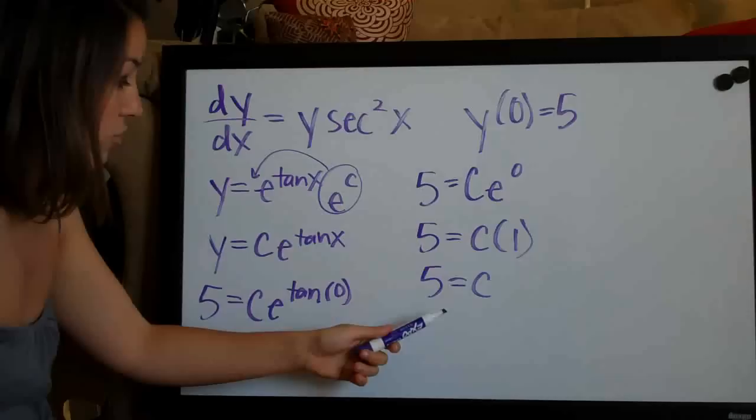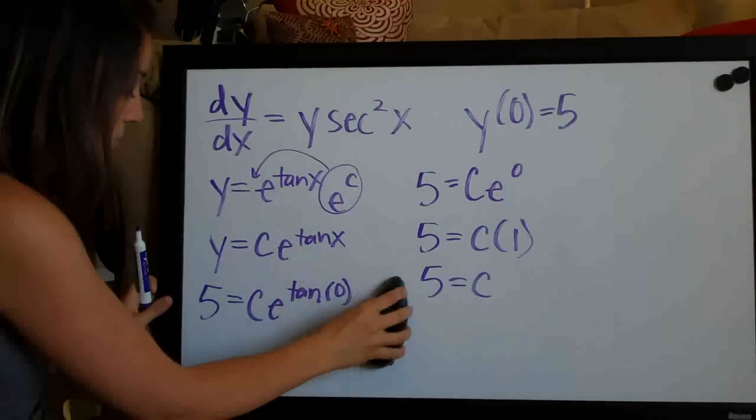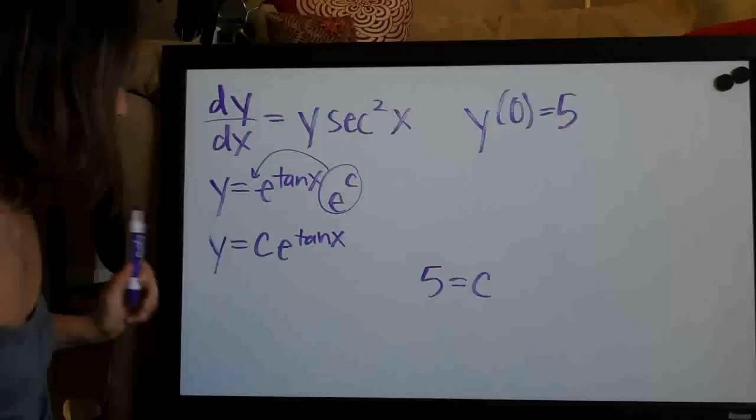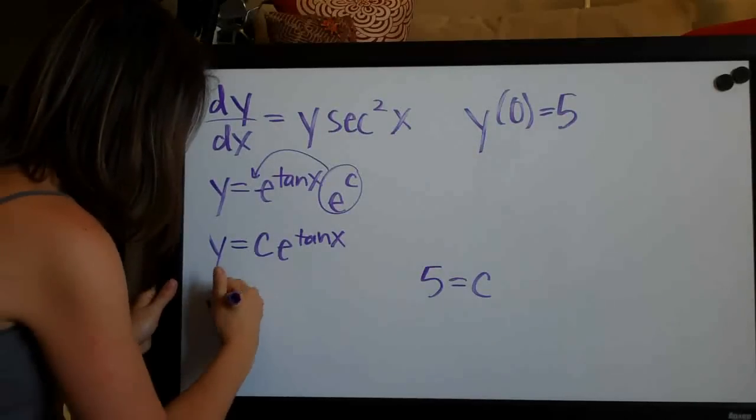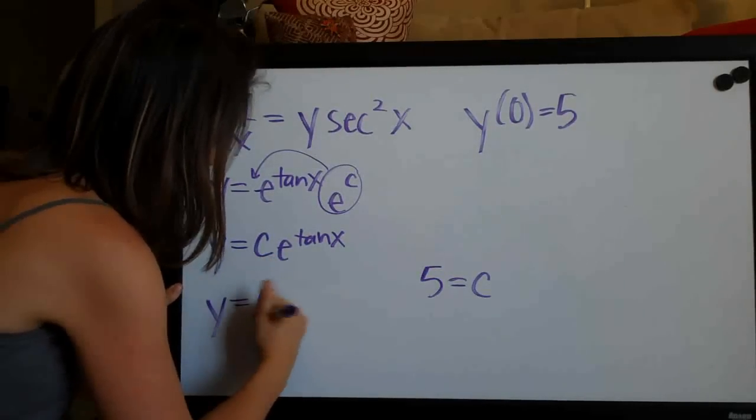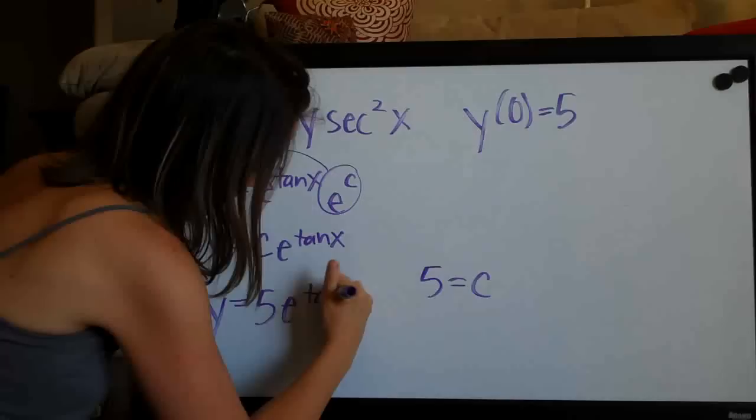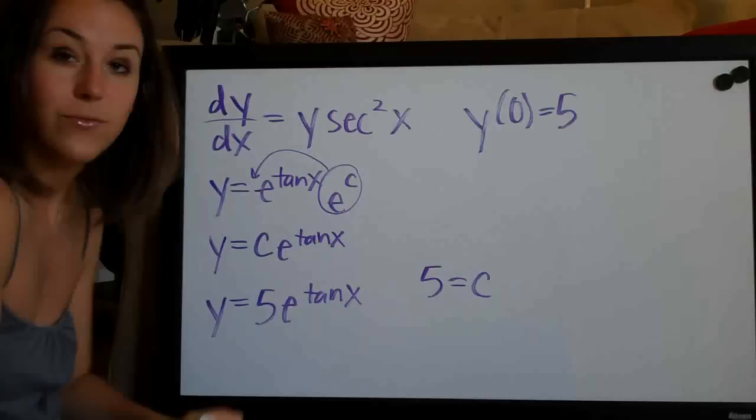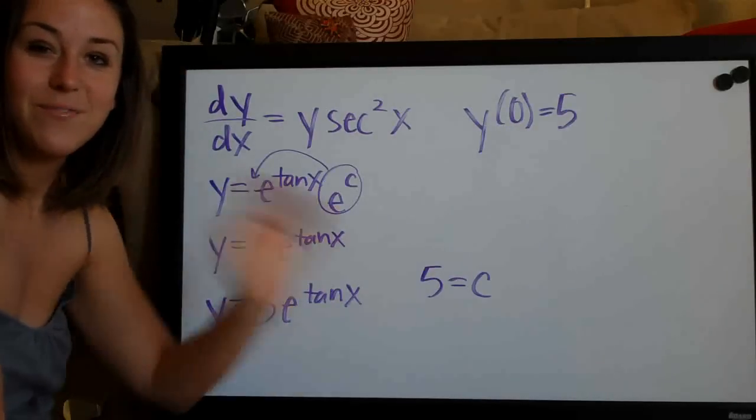So now that we have determined that c equals five, we can go ahead and plug five in for c and we'll get y equals five e to the tan x. And that's our final answer. So I'll see you guys next time. Thanks for watching.